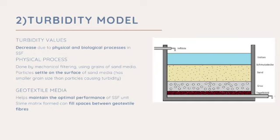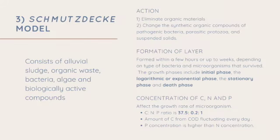The third one is the smootcher model. The smootcher model consists of alluvial sludge, organic waste, bacteria, algae and biologically active compounds. The action is when it eliminates organic materials and changes the synthetic organic compounds of pathogenic bacteria, parasitic protozoa and suspended solids. The formation of the layer is within a few hours or up to weeks depending on the type of bacteria and microorganisms that survive.